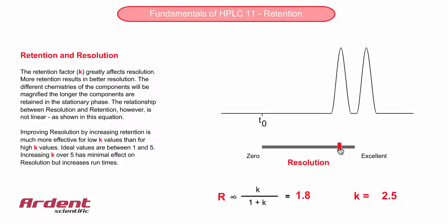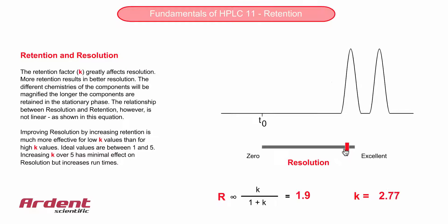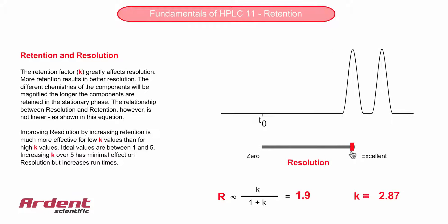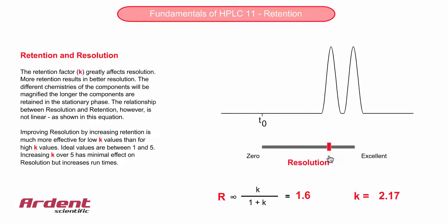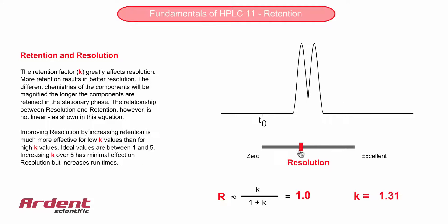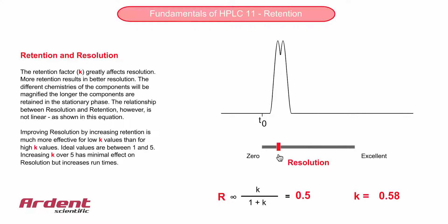This is important in HPLC method development because if the average retention factor of two peaks is measured and found to be, for example, 0.5, the first change to improve resolution would always be to increase retention. Retention factor values between 1 and 5 are fairly typical.